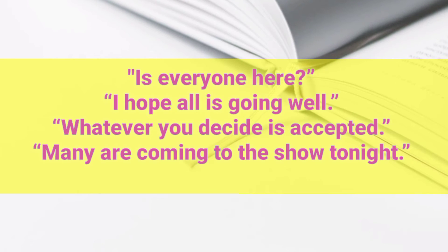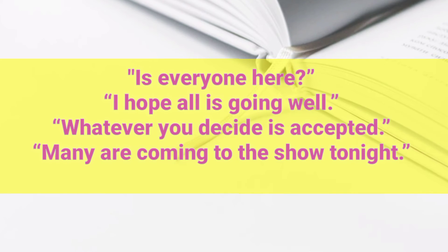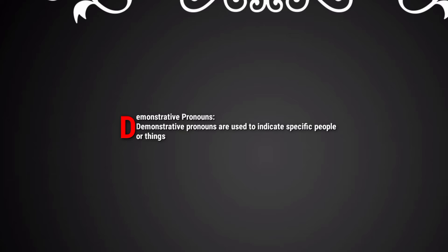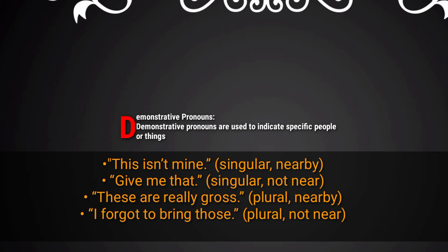In these examples, 'everyone,' 'all,' 'whatever,' and 'many' are indefinite pronouns, meaning the subject is not specified. Demonstrative pronouns. Demonstrative pronouns are used to indicate specific people or things and indicate whether they are singular or plural, and near or not near to the speaker. The most common are 'this,' 'that,' 'these,' and 'those.' For example: 'This is not mine' (singular and nearby). 'Give me that.' 'These are really gross.' 'I forgot to bring those.' 'Those' is used for plural and for something not near to the speaker.